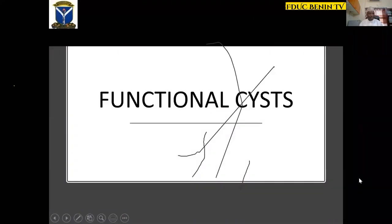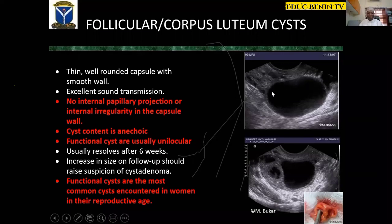Functional cysts are the commonest cysts encountered in clinical practice and will resolve spontaneously without any intervention. In the majority of cases, they disappear within six weeks. They usually have thin walls and clear content with very good sound transmission. This is a corpus luteum with a follicle beside it, and within the corpus luteum you can see some echogenic areas representing luteal cells. This is a rare appearance of corpus luteum appearing as a double follicle.